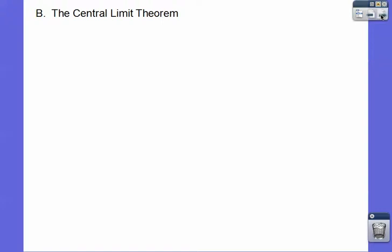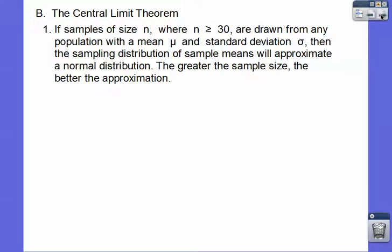The Central Limit Theorem goes like this: if samples of size n, where n is greater than or equal to 30, are drawn from any population — normal or non-normal — with mean mu and standard deviation sigma, then the sampling distribution of the sample means is going to be approximately normal. The greater the sample size, the better the approximation.